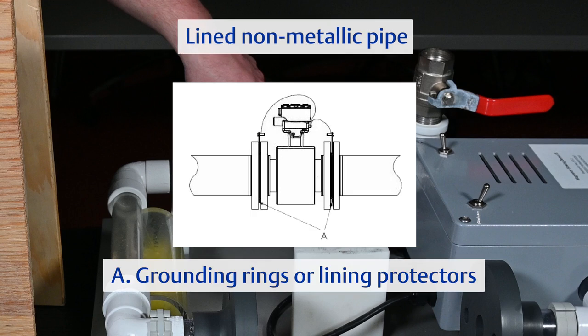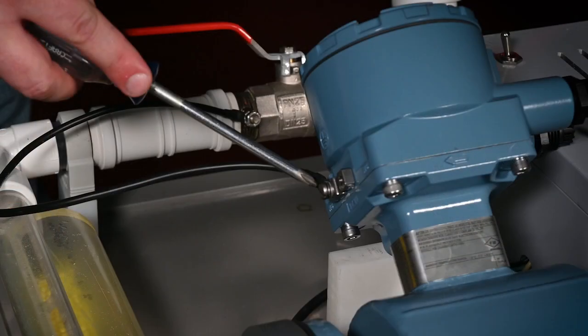Use grounding rings or lining protectors in lined or non-metallic pipe. It may be necessary to have a ground connection at the sensor to avoid ground loops or to comply with local or plant electrical codes. Ground loops can result in electrode saturation, resulting in the meter reading dropping to zero flow.